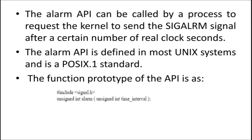The alarm API can be called by a process to request the kernel to send the signal alarm signal after a certain number of real clock seconds. In simple words, you can set the alarm for some seconds. Suppose if you want to wake up your process after five seconds, you can use the alarm API to set the alarm.